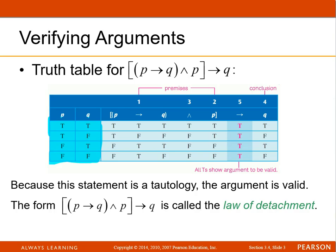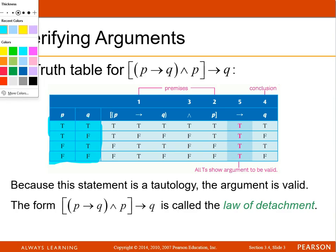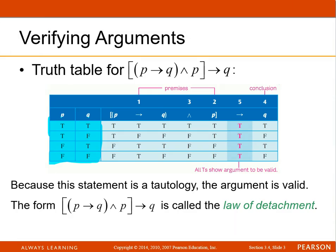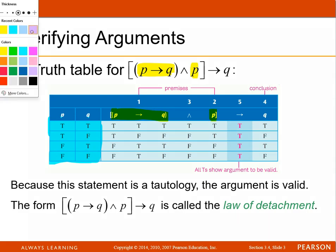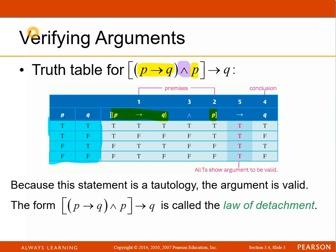And then they come over here, and they look for, they wrote out the first premise here, if P, then Q. That's this one right here, if P, then Q. And P, there's P, and they connect it with the and, which is right here.